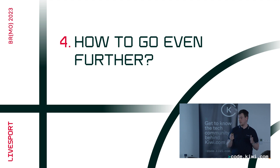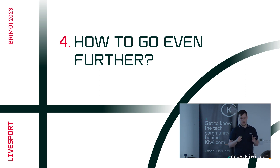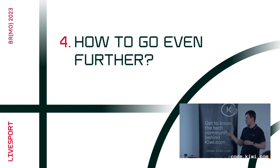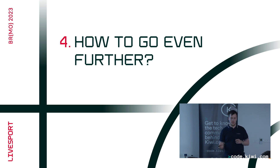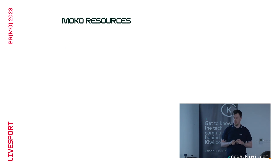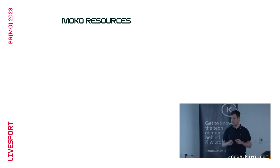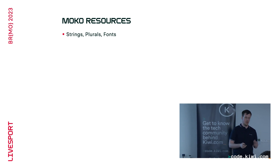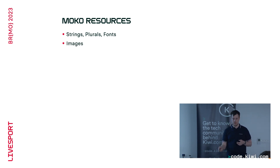You may have noticed I wasn't talking about sharing resources. I want to mention a few very promising technologies we don't completely use yet but that deserve your attention. The first is MOKO Resources — an open-source library on GitHub that allows you to share text resources like fonts and strings, and provides APIs for images and colors.